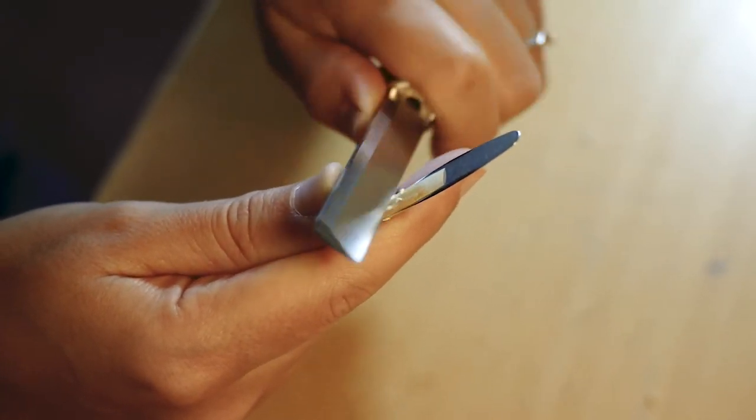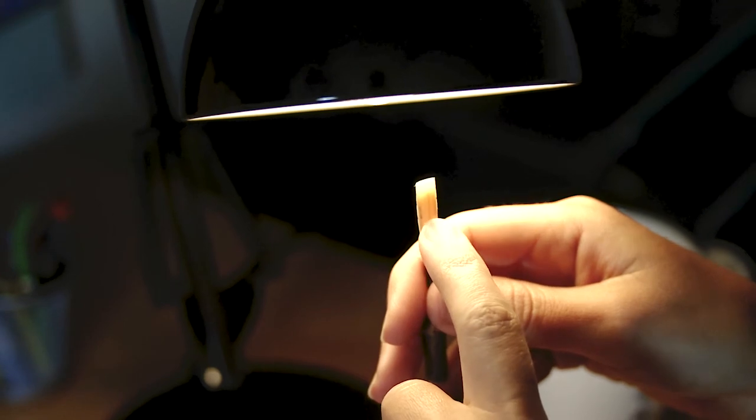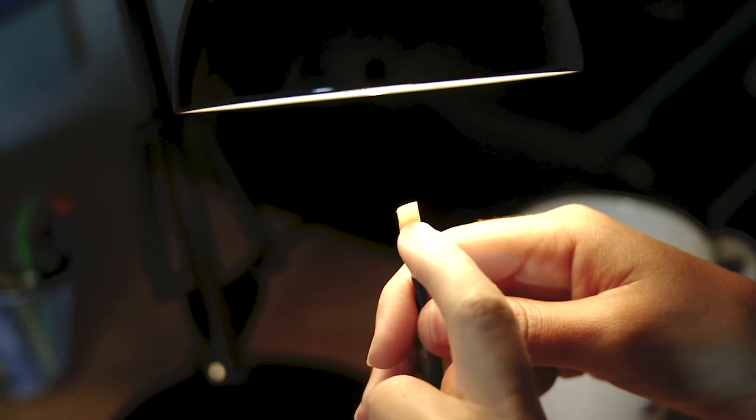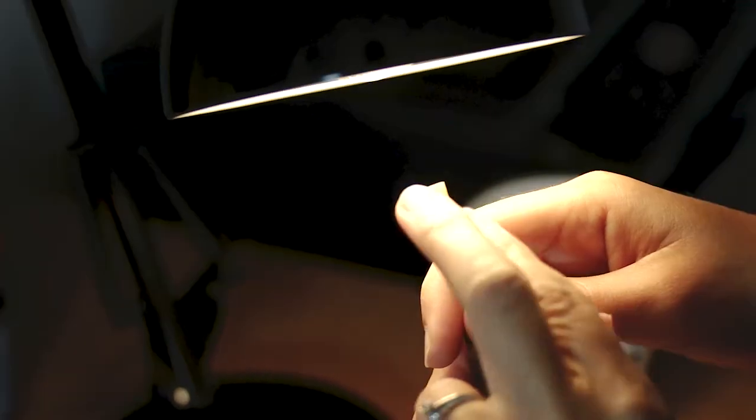So we have the three basic parts of the reed. The windows, the heart, and the tip. The part between the heart and the tip is called the blend. And you have the spine and the rails.